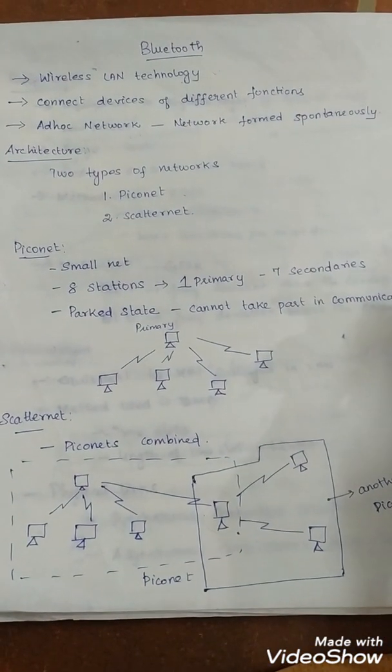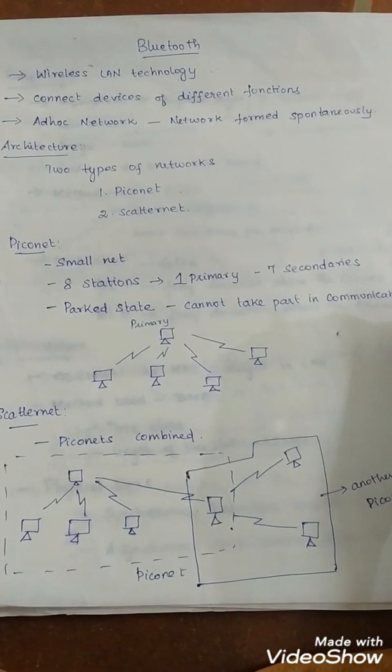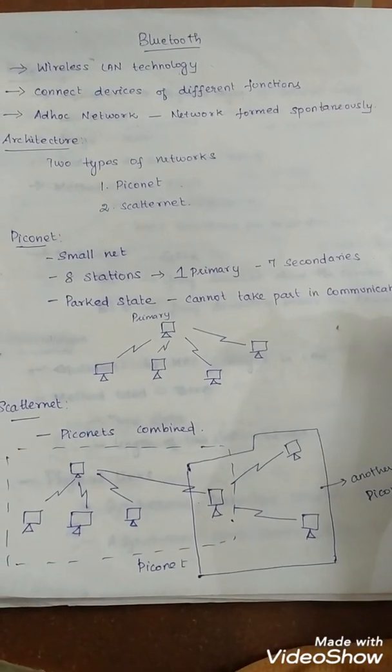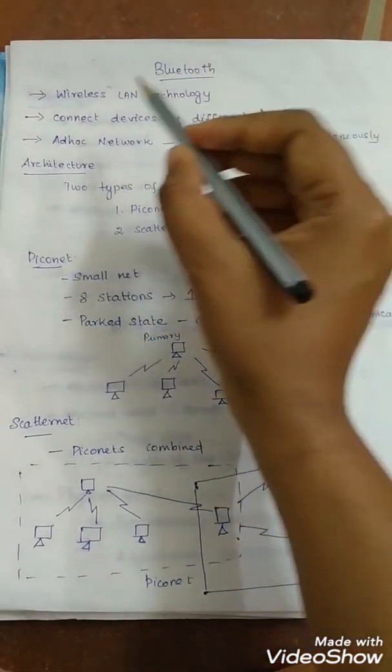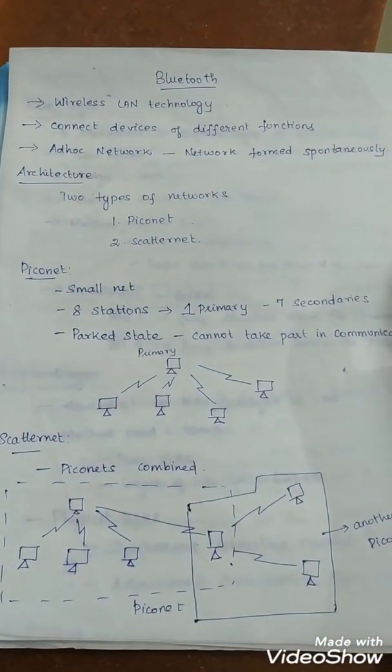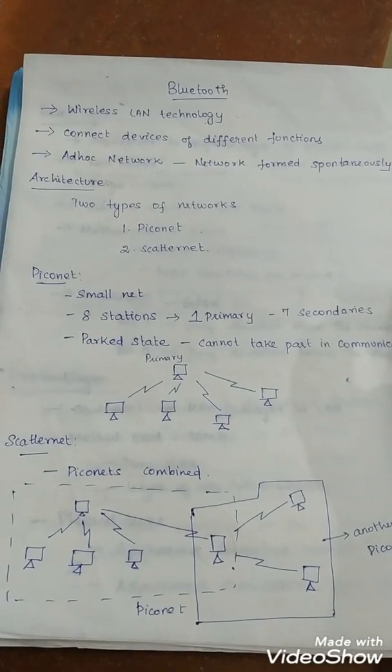Let us discuss the topic Bluetooth, its architecture, and layers of Bluetooth. First, what is Bluetooth? Bluetooth is a wireless LAN technology device designed to connect devices of different functions, for example, telephones, computers, cameras, printers, coffee makers, and so on.